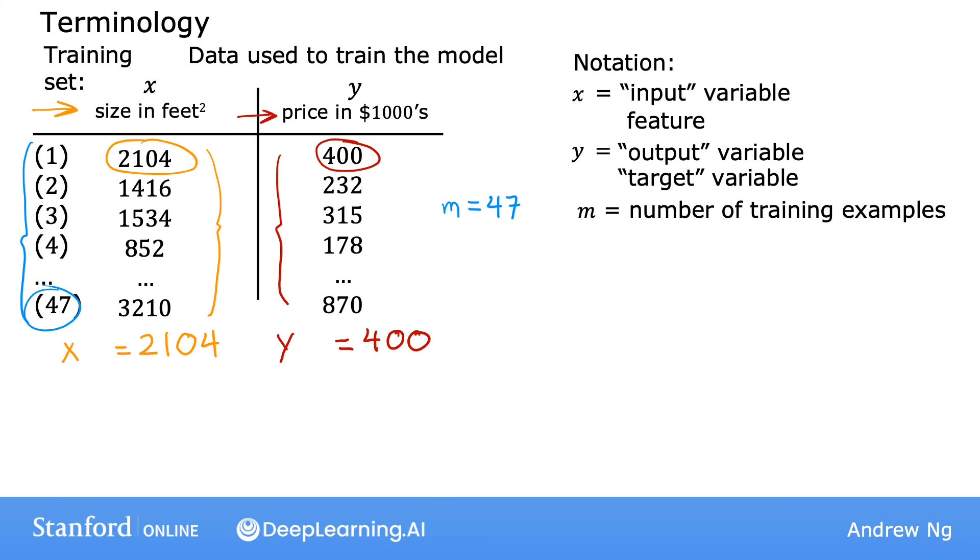To indicate a single training example, we're going to use the notation parentheses x comma y. So for the first training example, x comma y, this pair of numbers is 2104 comma 400. Now, we have a lot of different training examples. We have 47 of them, in fact.